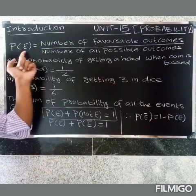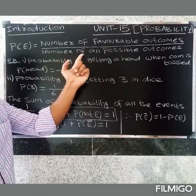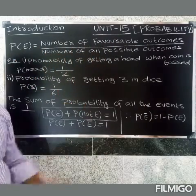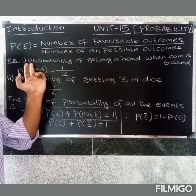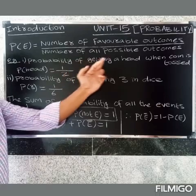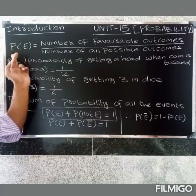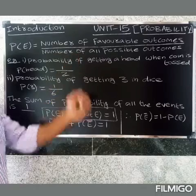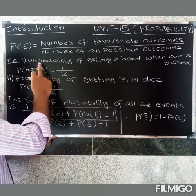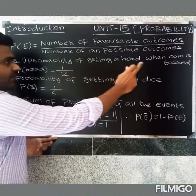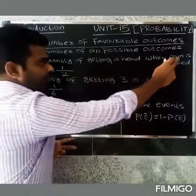The definition of probability: P(E) equals the number of favorable outcomes divided by the number of all possible outcomes. For example, let's find the probability of getting a head when a coin is tossed.